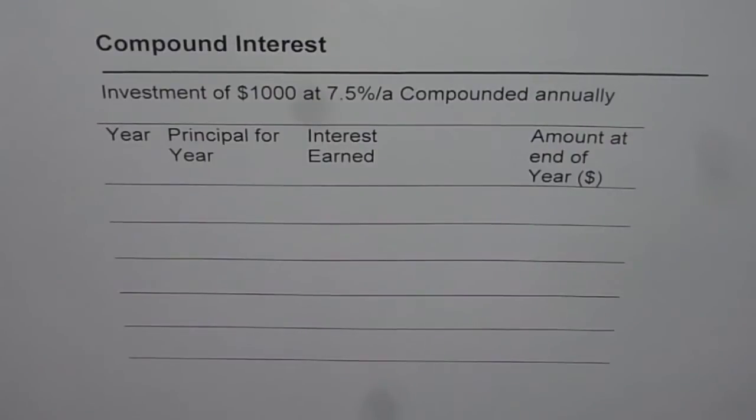In this video, let us see how much will an investment of $1,000 at 7.5% per annum compounded annually grows. In the previous video, we saw that when $1,000 is invested at 7.5% per annum on simple interest, it grows to $1,375. Now let's compare that number when it is compounded.